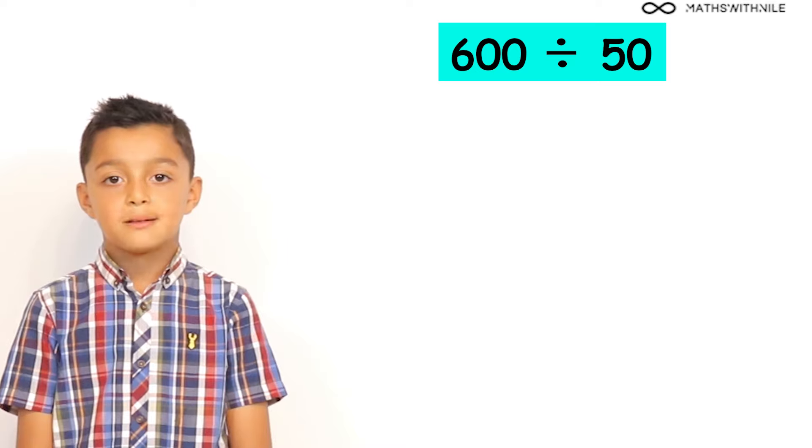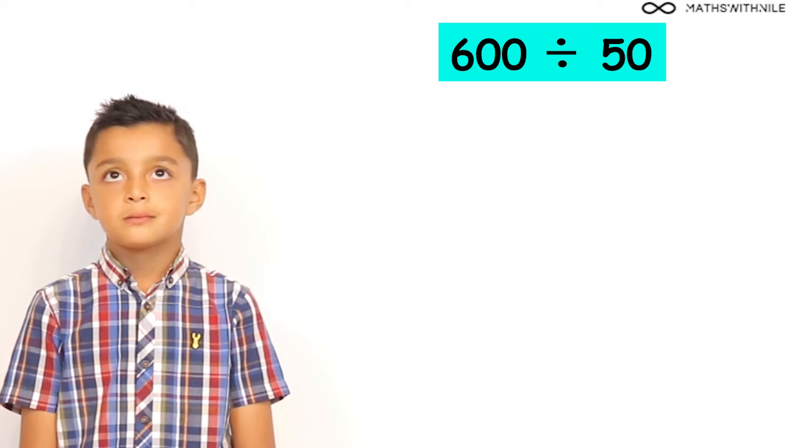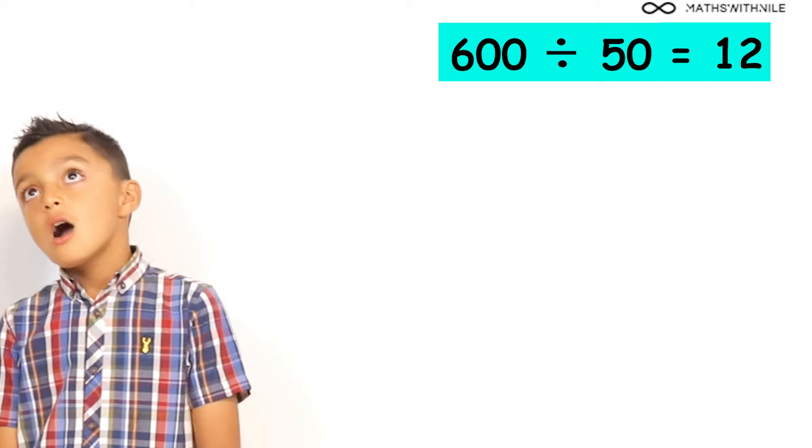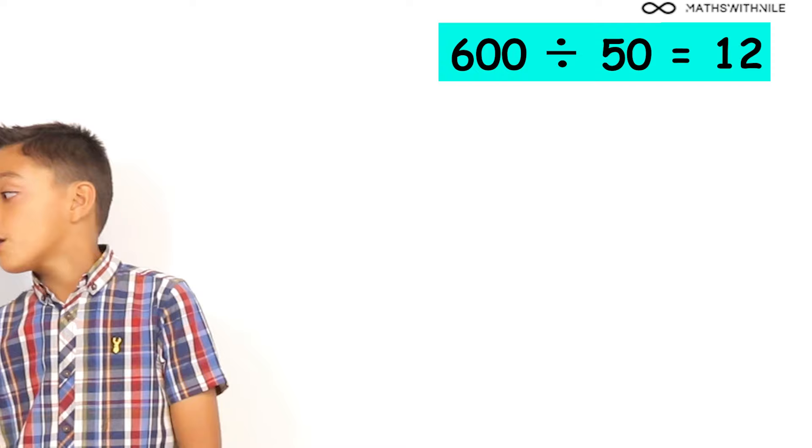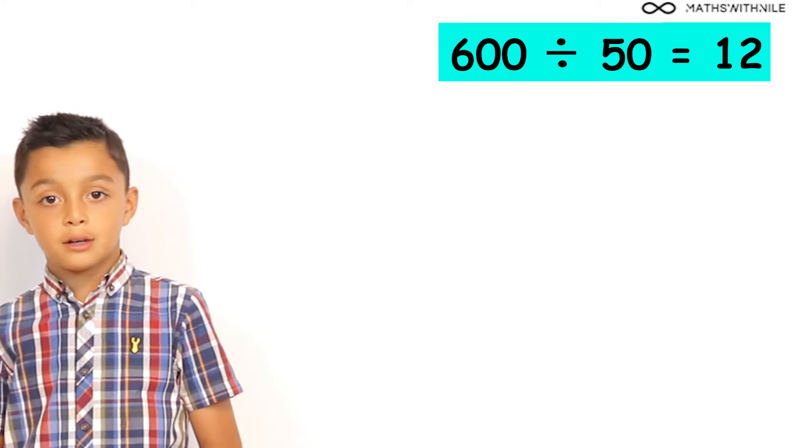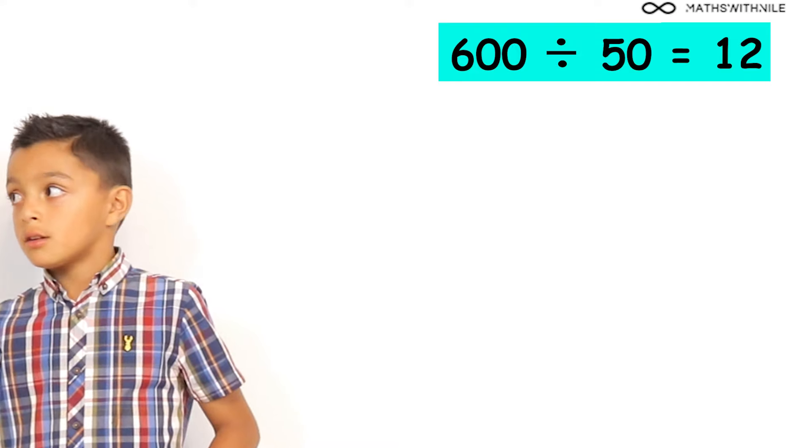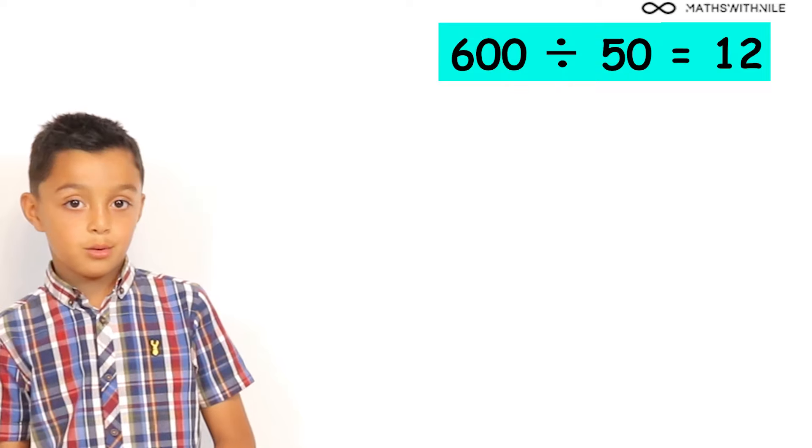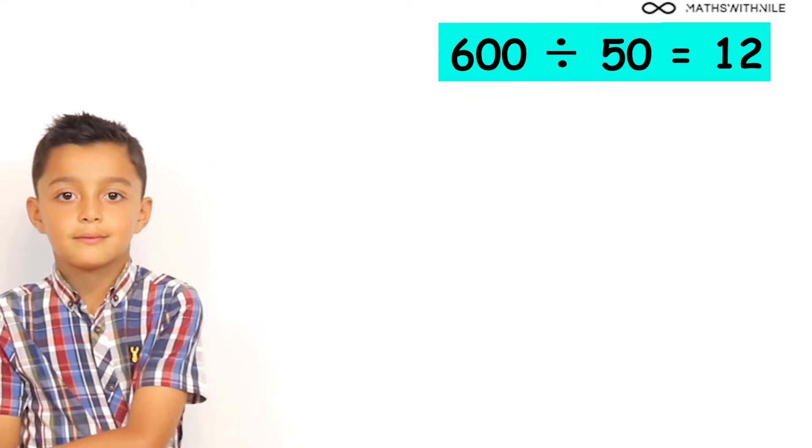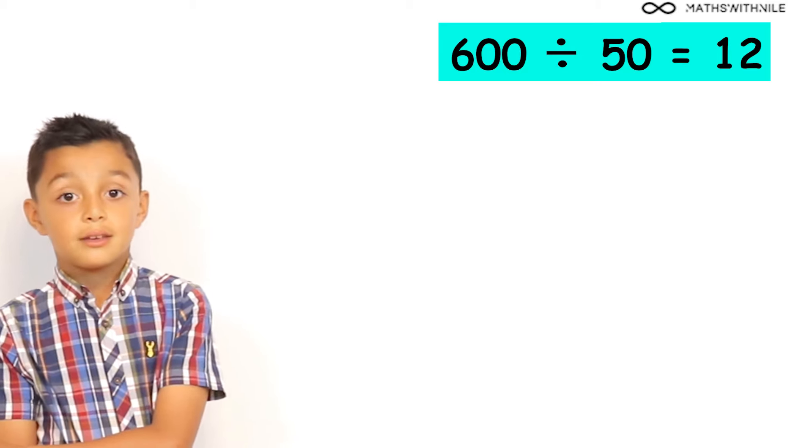What is 600 divided by 50? Is it 12? It is 12. So, there's two 50s in 100. So, then 6 times 2 is 12. So, because there are two 50s in 100, if we have 600, we times 2 by 6 and we get 12.